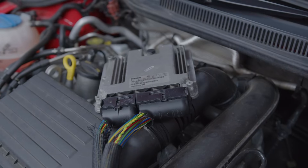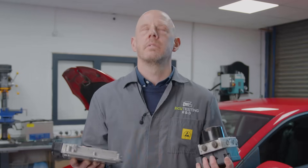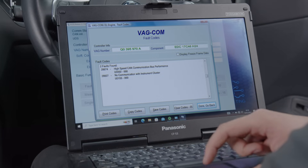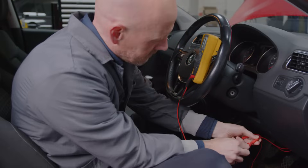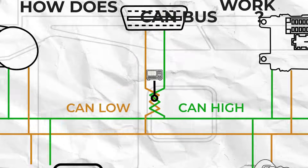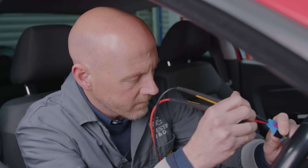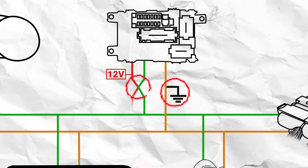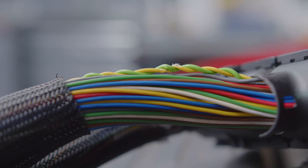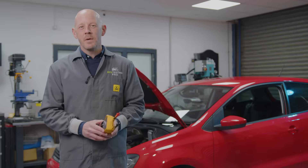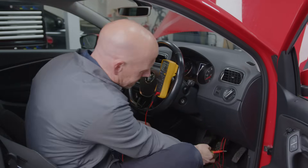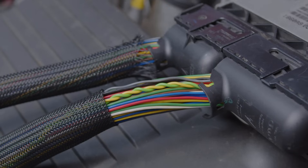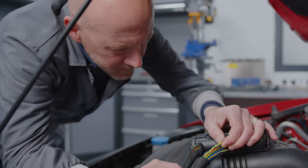When you've got CAN communication faults with one or multiple control modules on a vehicle, as well as fault codes U0001 through to U0009, then you've got a CAN bus problem. In this video I'm going to run through everything you'll need to do in order to diagnose what the fault is and how to fix it. I'm Tim and this video is all about diagnosing faults on the high-speed CAN bus using nothing but a multimeter.